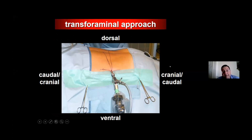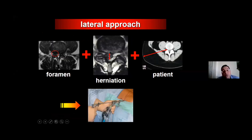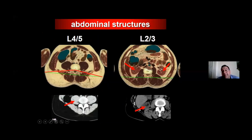The transforaminal approach has many useful applications. This is the way we approach the foramen — we approach the lower quadrant of the foramen, saving the nerve root. This is the corridor that we use. Sometimes we use the pure transforaminal approach, and sometimes we apply a posterolateral approach.